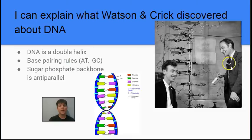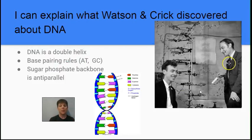Our next learning target is to explain what Watson and Crick discovered about DNA. This is an image of James Watson and Francis Crick with their model of DNA. They discovered that DNA had the famous double helix structure, so it looks like a rope ladder which is being twisted as it comes down. They applied Chargaff's rules to understand that adenine and thymine always pair together, and cytosine and guanine always pair together. They also described the sugar-phosphate backbone running anti-parallel, using data from Rosalind Franklin.